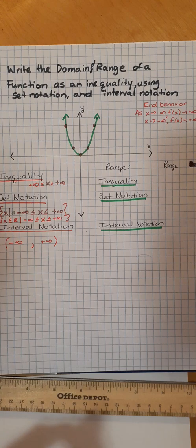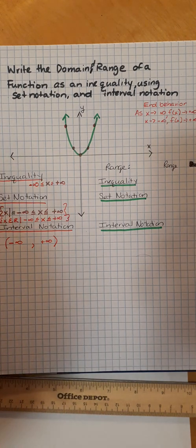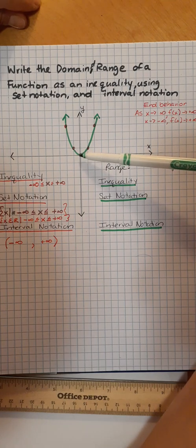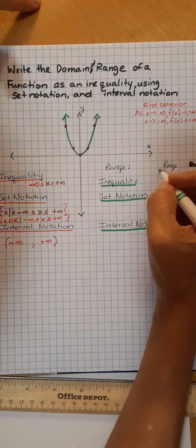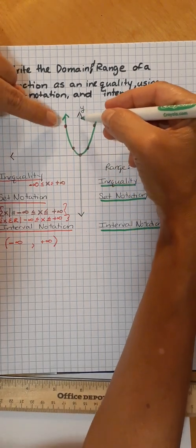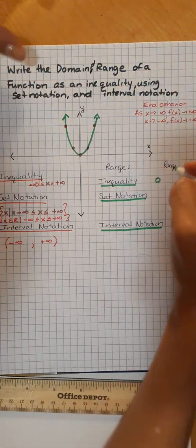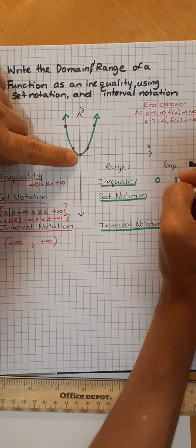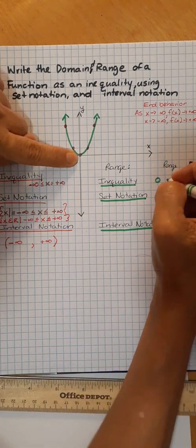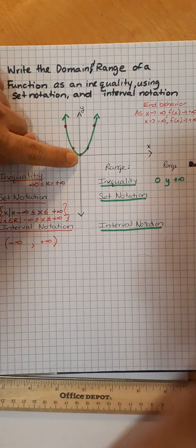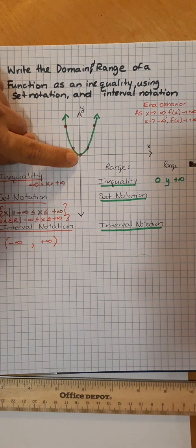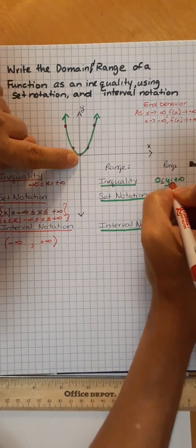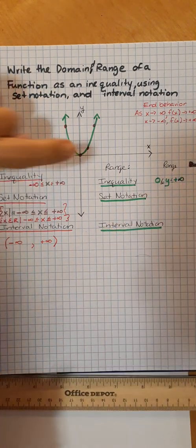Now let's take a look at the range. The range is going to be your y's. What's my lowest y? Well, I do have an endpoint — my inequality for y, the smallest number is zero. And what's the highest number? As this goes up, my y's are going up, but there's no stopping because there are arrows, and this is on the positive side of the y-axis. So it would be starting at zero to positive infinity. So y is greater than or equal to zero and less than or equal to positive infinity. That's the inequality.